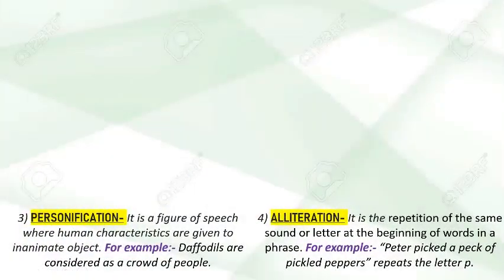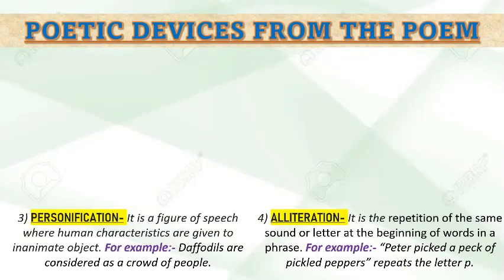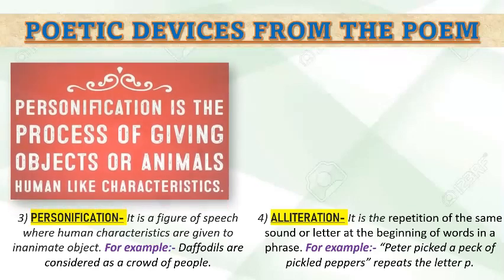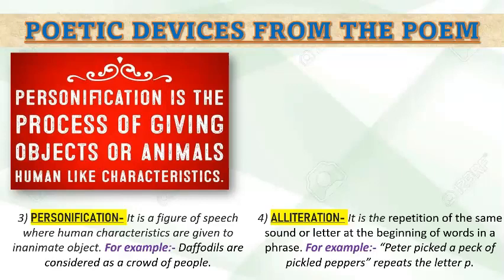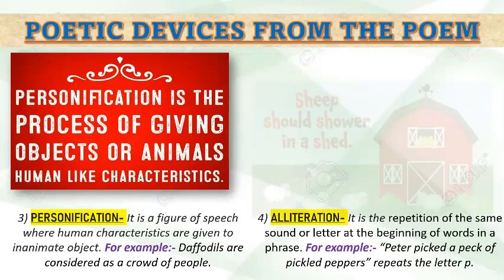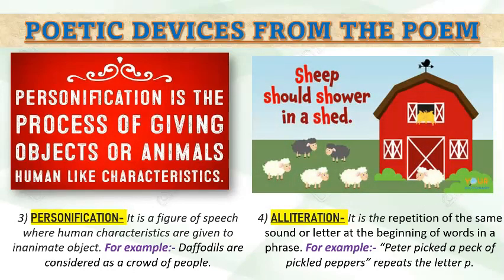Now let's look at personification — a very common poetic device. It is a figure of speech where human characteristics are given to inanimate objects. For example, daffodils — it is a great example where flowers are considered as a crowd of people. Now let's move forward with alliteration. It is the repetition of the same sound or letter at the beginning of words in a phrase. For example: 'Peter Piper picked a peck of pickled peppers' repeats the letter P. You will find that most tongue twisters use alliteration.